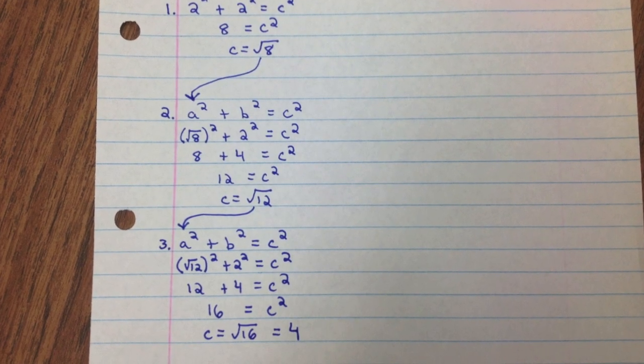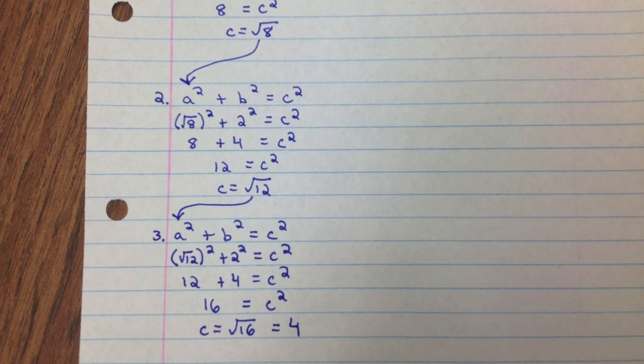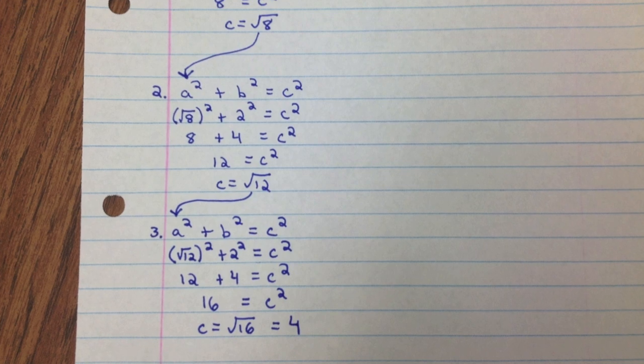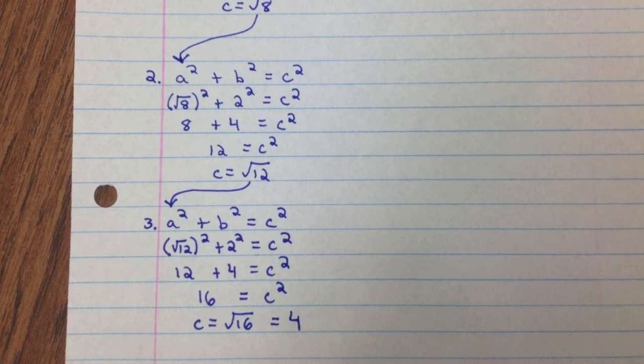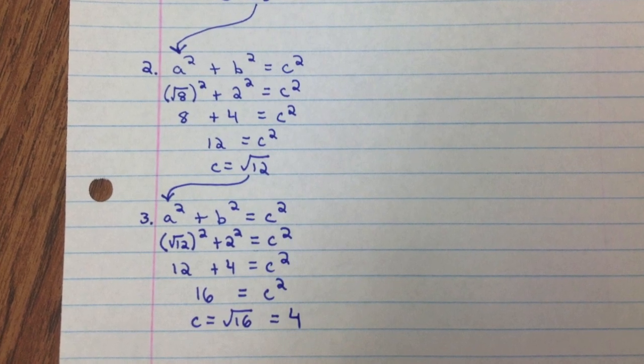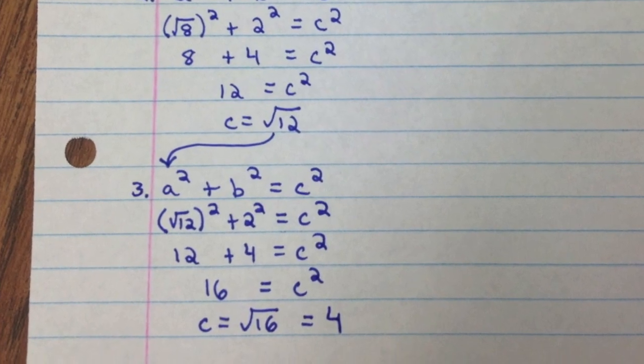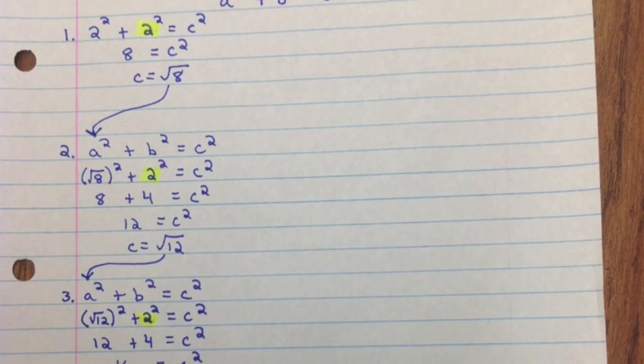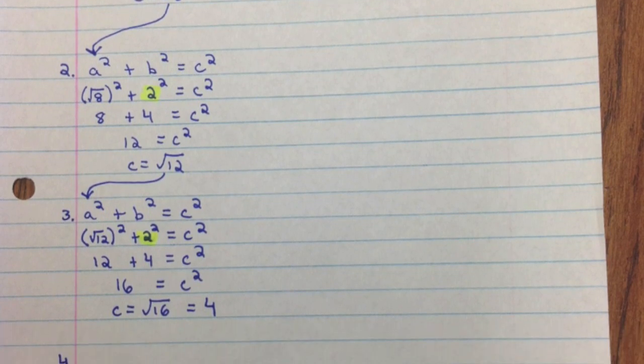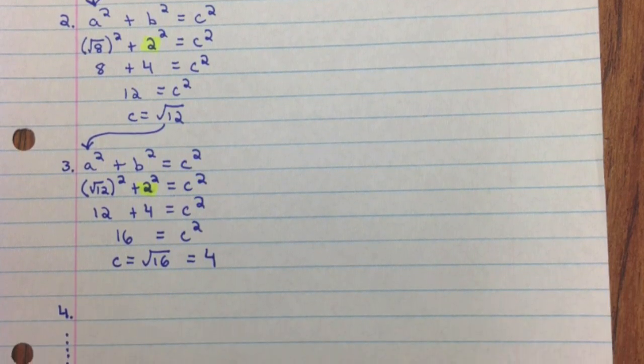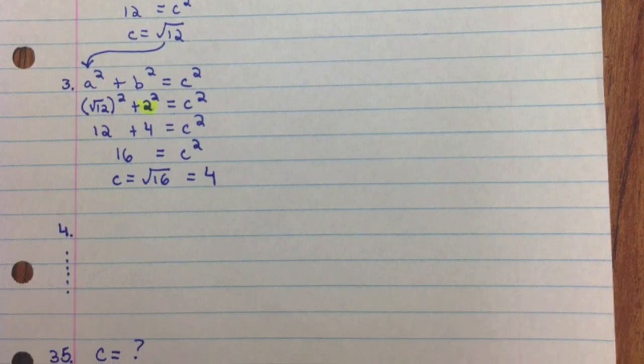Continue repeating this pattern where the base of your next triangle is always the hypotenuse from the triangle before. And then we are always adding 2 squared. So you're going to continue this pattern for all 35 triangles. You will find the length of the hypotenuse for each triangle. And then I want you to compare your calculation for the largest hypotenuse in your spiral. And then measure your actual hypotenuse on your spiral and see how accurate you were.